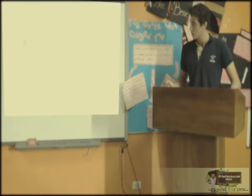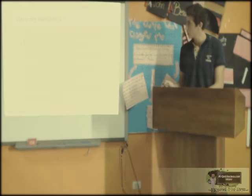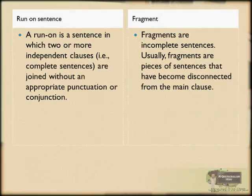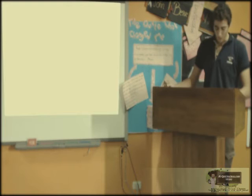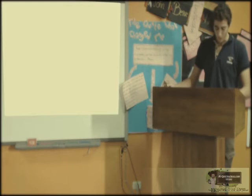Now I'm going to talk about the errors. Run-on sentences: a run-on is a sentence in which two or more independent clauses — i.e., complete sentences — are joined without a proper conjunction. Fragment, or incomplete sentence: fragments are pieces of sentences that have become disconnected from the main clause. Comma splice: an error that occurs when there are two complete sentences joined without a conjunction or transition word.